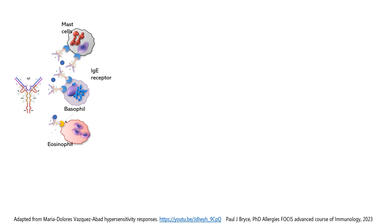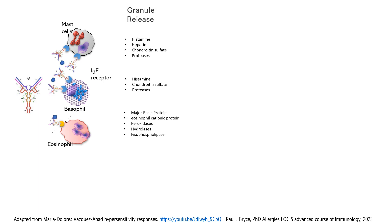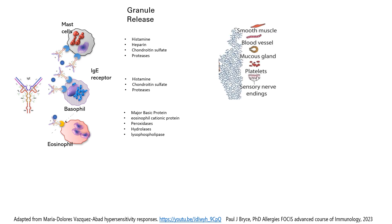The response to IgE basically drives three types of cells that bear the IgE receptor. The importance of these three types of cells is that they contain granules that will destroy proteins in several different tissues, and this causes an immediate reaction within minutes.